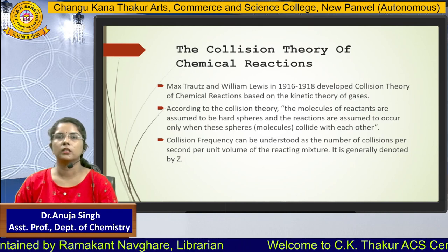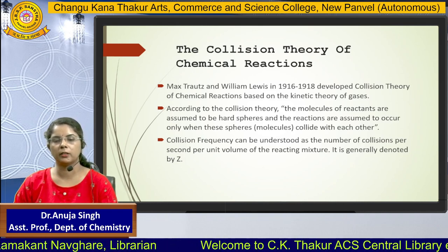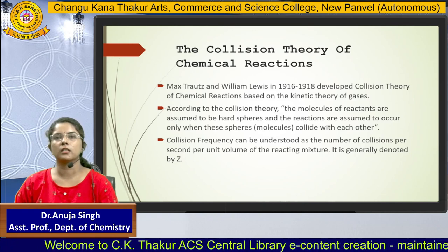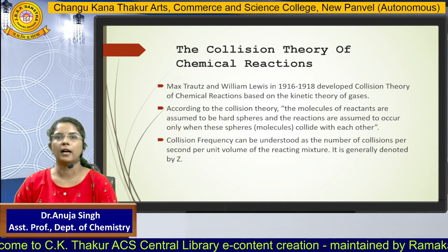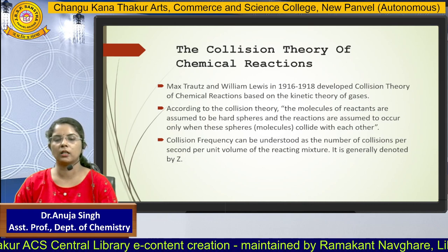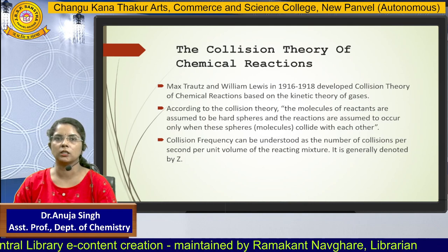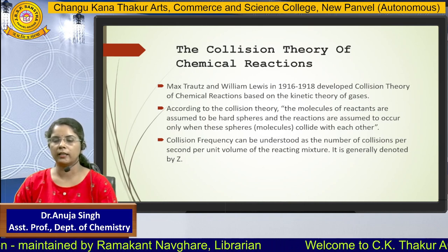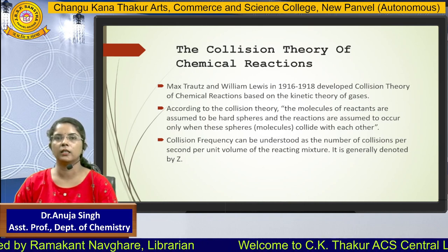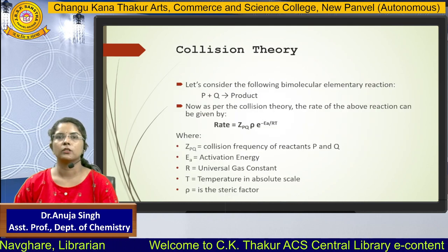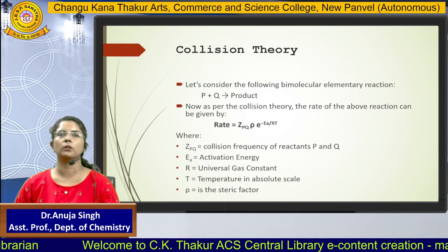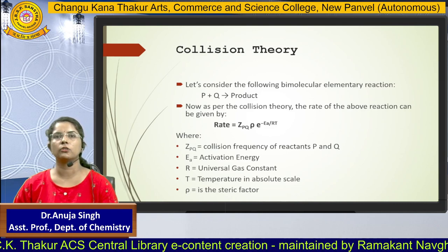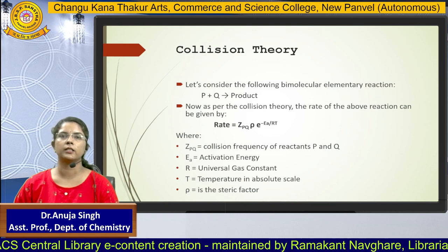The Collision Theory of chemical reactions was developed by Max Schwartz and William Lewis in 1916 to 1918. According to this theory, the molecules of the reactants are assumed to be hard spheres, and reactions are assumed to occur only when these spheres collide with each other. The term collision frequency refers to the number of collisions per second per unit volume of the reacting mixture, denoted by Z. Two molecules come close together and collide, and because of that collision, a product results.